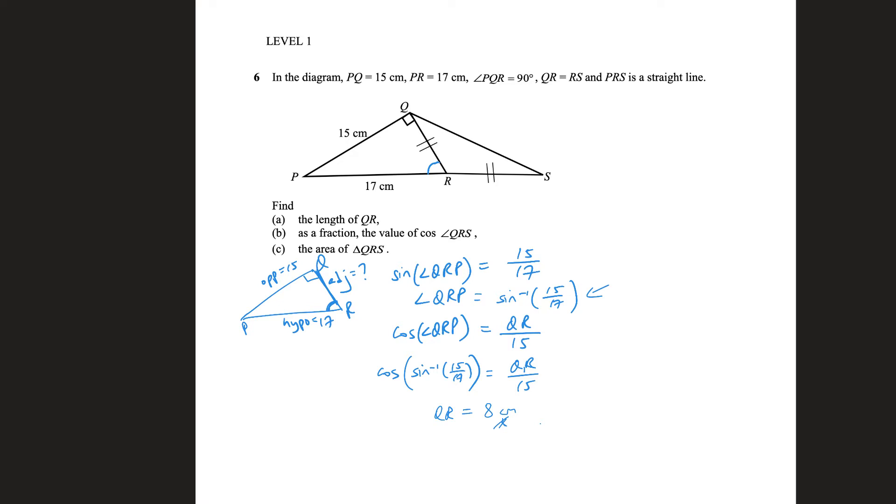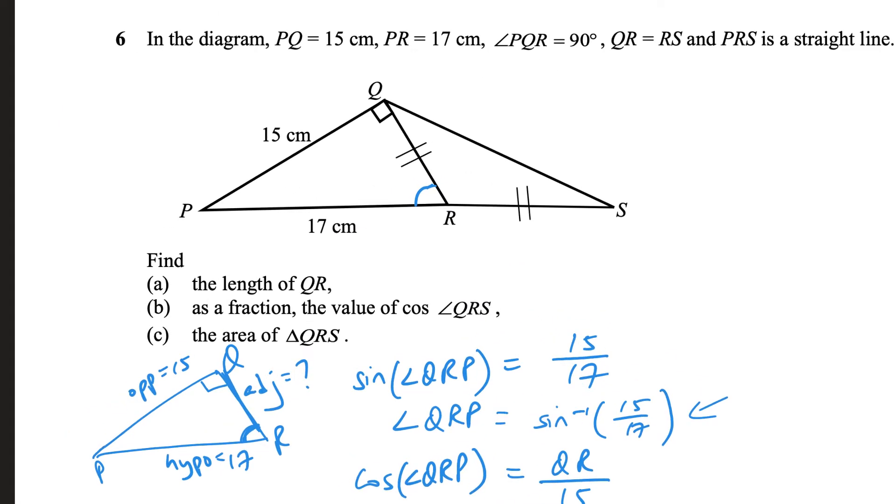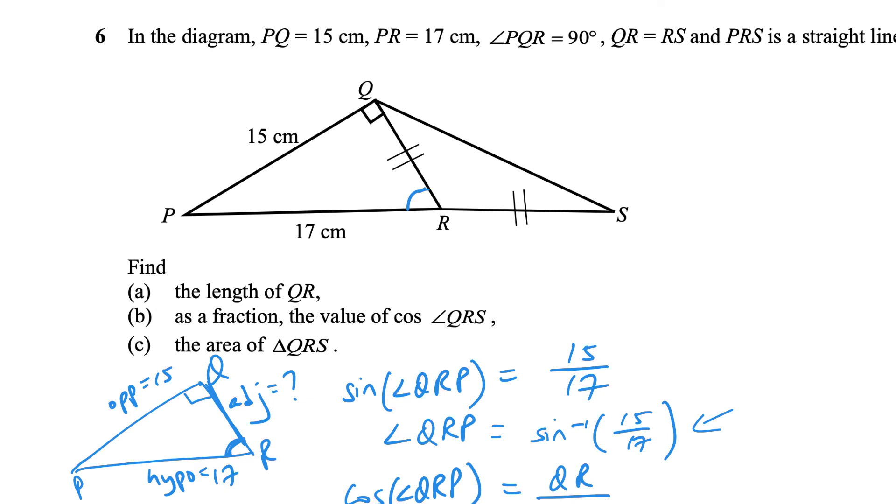Part B, as a fraction, we need to find the value of cosine QRS. That's not too bad, I think, because we already found a lot of stuff to do with this angle. In fact, I think we found this angle QRP is basically the sine inverse of this.